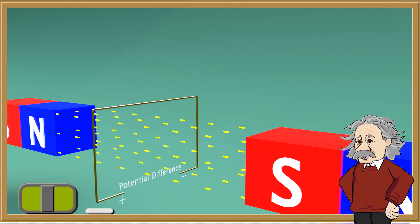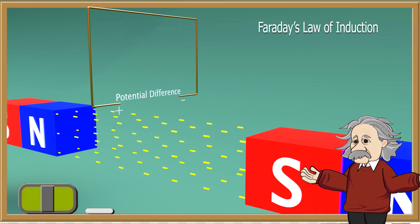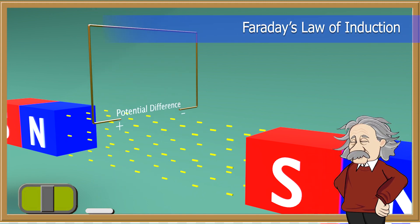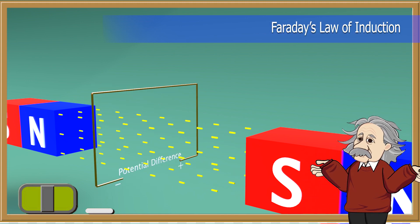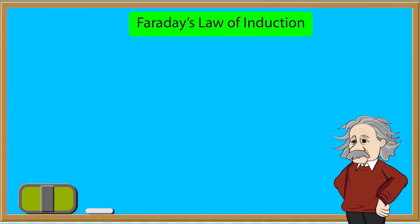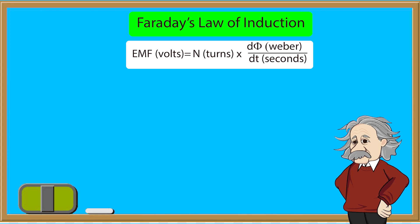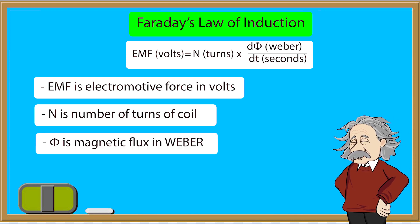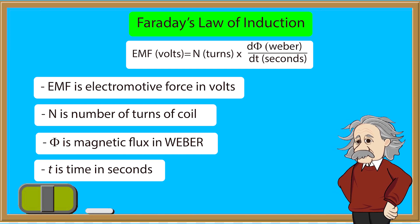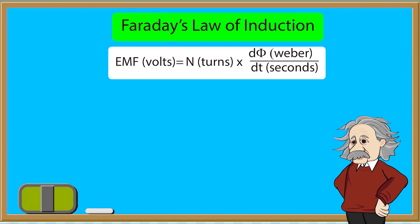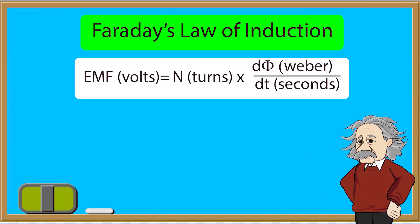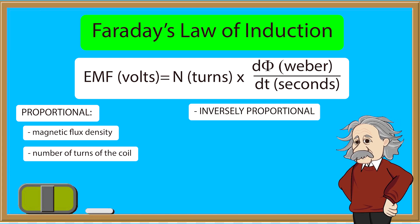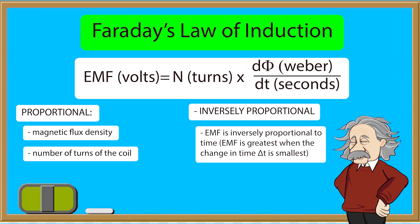If anyone would ask you to describe electromagnetic induction, there's no better way than with Faraday's law of induction. Faraday's law of induction is a basic law of electromagnetism that predicts how a magnetic field will interact with an electric circuit to produce an electromotive force (EMF). The equation for the EMF induced by a change in magnetic flux is: EMF is electromotive force in volts, N is number of turns of coil, Φ (phi) is magnetic flux in Webers, and t is time in seconds. Three parameters affect the size of EMF: EMF is proportional to magnetic flux density and the number of turns of the coil, and EMF is inversely proportional to time. EMF is greatest when the change in time t is smallest.